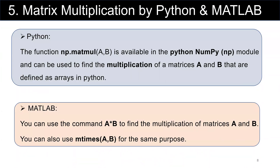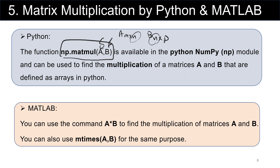To implement matrix multiplication in Python, you can use the NumPy library with the command np.matmul(A, B), where the number of columns in A must equal the number of rows in B. In MATLAB, you can use A * B, or equivalently the command mtimes(A, B).